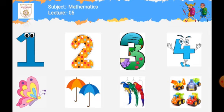So just read: one, two, three, four. Number one, number two, number three, number four. One butterfly — one butterfly. Two umbrellas — two umbrellas. Three parrots — three parrots.